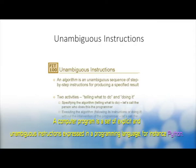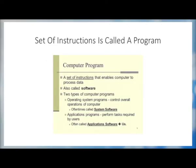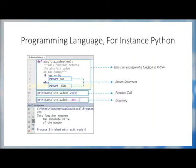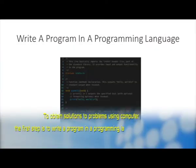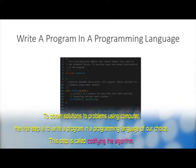Hello students. In this module, we will discuss about computer problem solving, or programming methodologies to be more precise. A computer program is a set of explicit and unambiguous instructions expressed in a programming language, for instance Python. This set of instructions is called a program. A computer program can also be viewed as an algorithm expressed in a programming language. An algorithm is a solution to a problem independent of any programming language. The first step to obtain solutions using a computer is to write a program in a programming language of our choice. This step is called codifying the algorithm.